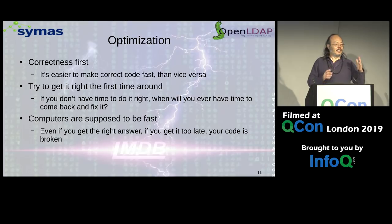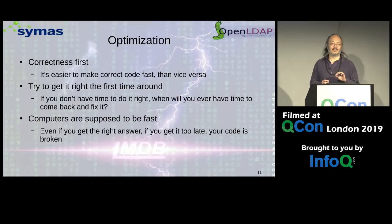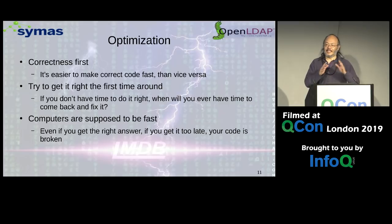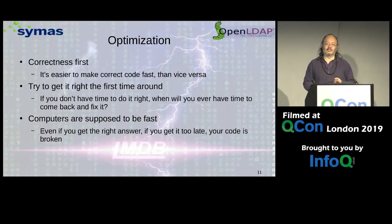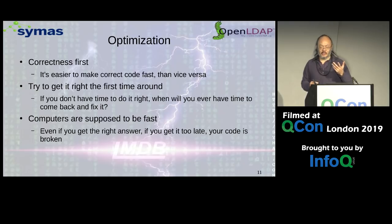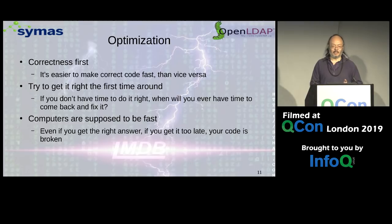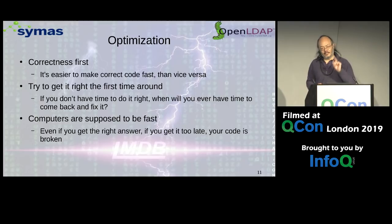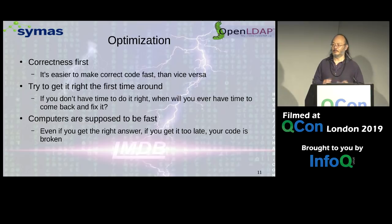You really do want to try as much as you can to get everything right the first time around. If you say 'I don't have time to think about this that hard,' when are you going to have time to come back and fix it? It's not going to happen. Computers are supposed to be fast — processors are running at three gigahertz or whatever. So if your code is correct but gives you the right answer too late, that code is broken, at least in my perspective.